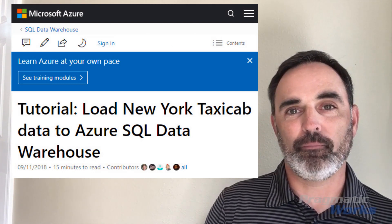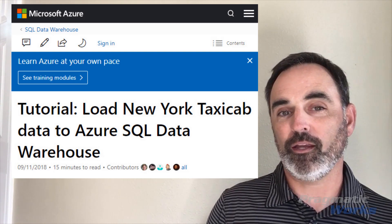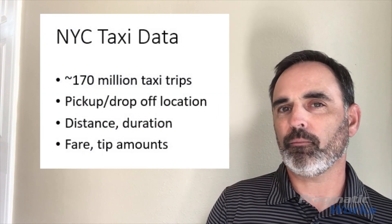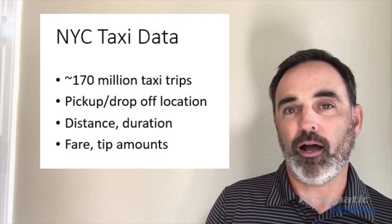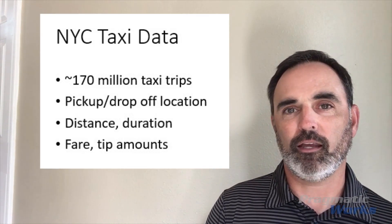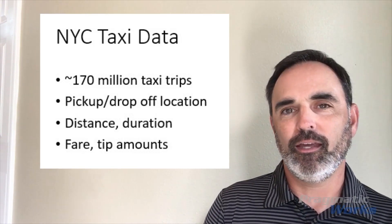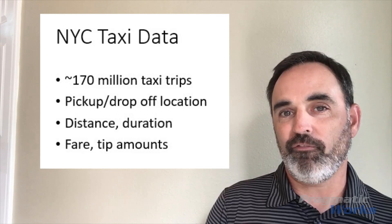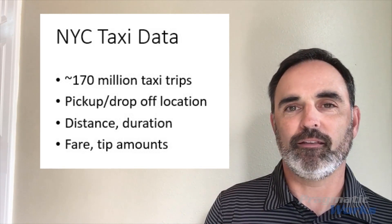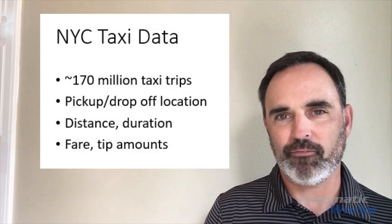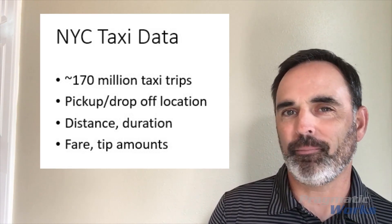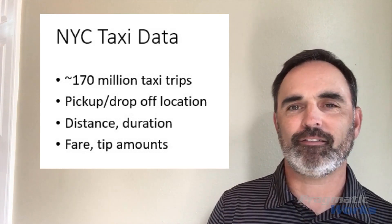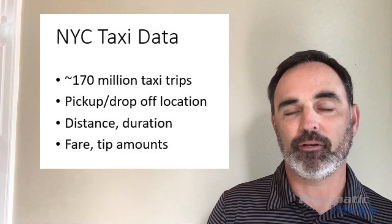This screenshot here is just an image from the tutorial page. You can find this by doing a search for that tutorial of loading New York taxicab data to Azure SQL Data Warehouse. A little bit about this data set — it's pretty widely used and it's a publicly available data set. It has about 170 million records for taxi trips, and it includes things like the location of where passengers were picked up and dropped off, how long the trip was in terms of distance and time, and also the fare amount and tip if one was provided. I've seen this data set used for building predictive analytic models, trying to determine the amount of a tip a passenger might provide, or simply whether or not a tip will be provided. This is a pretty commonly used data set, and Microsoft has provided a tutorial and access to the data pretty easily for us to use.